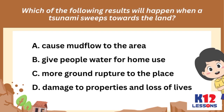Which of the following results will happen when a tsunami sweeps towards the land? A. Cause mudflow to the area, B. Give people water for home use, C. More ground rupture to the place, D. Damage to properties and loss of lives.